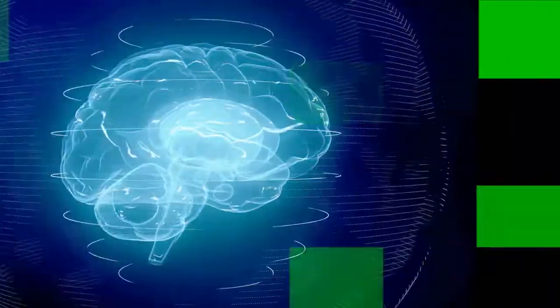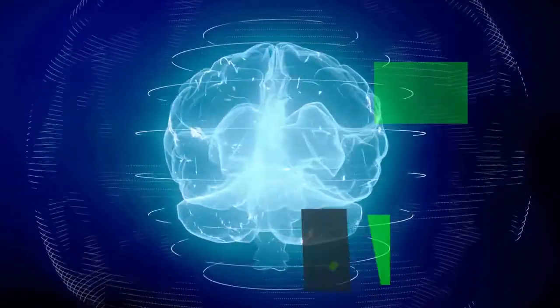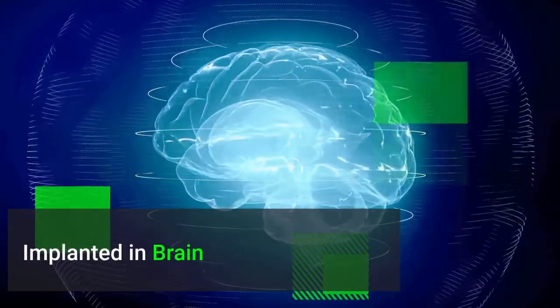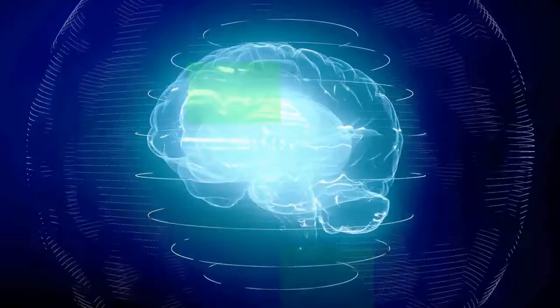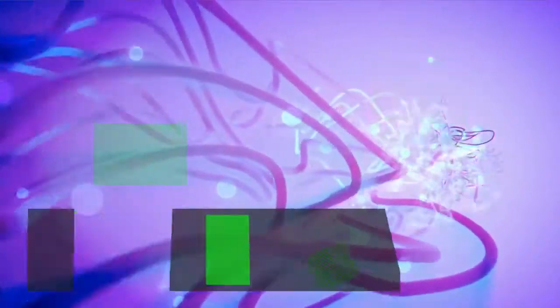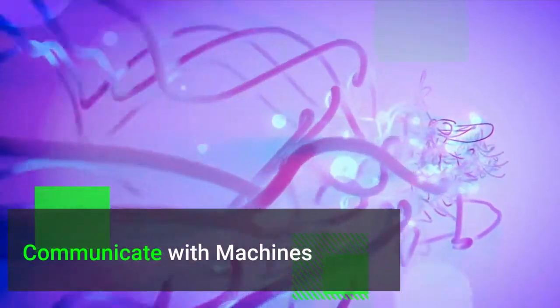What is Neuralink? Neuralink is a device that will be surgically implanted into your brain. Wait, what? Yes, you heard it right. Once the Neuralink is embedded into your brain, you'll be able to communicate with machines and even control them.